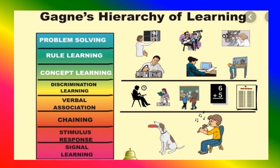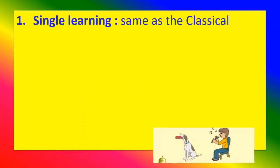Looking at the hierarchy of learning, it progresses from Signal Learning, Stimulus-Response, and Training, through Verbal Association, Discrimination Learning, Concept Learning, Rule Learning, and finally Problem Solving. We are going to go into detail about each of these.